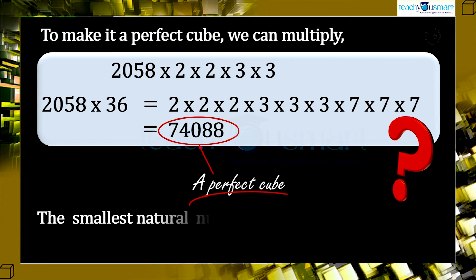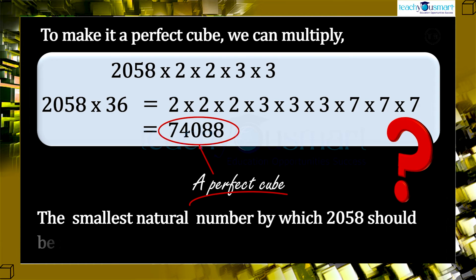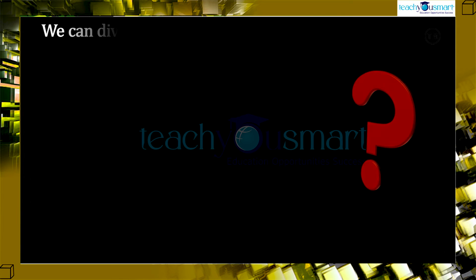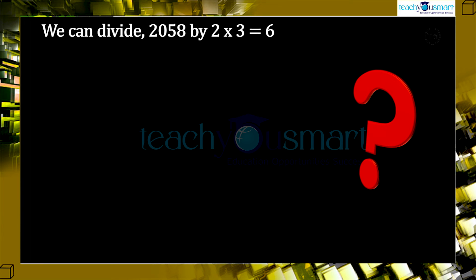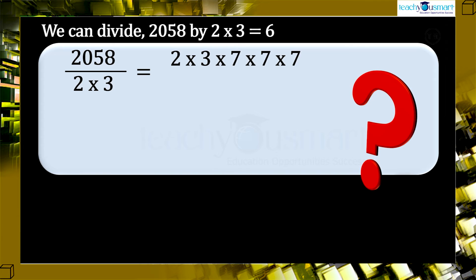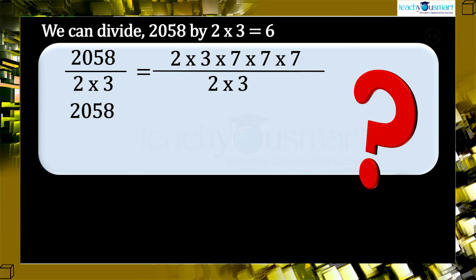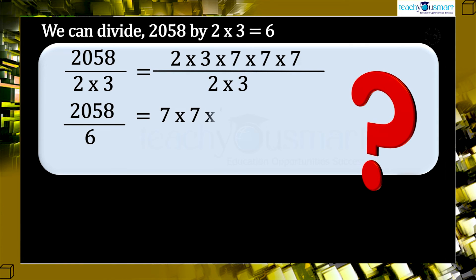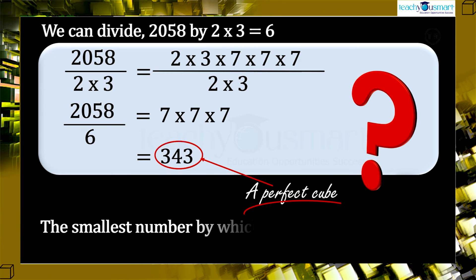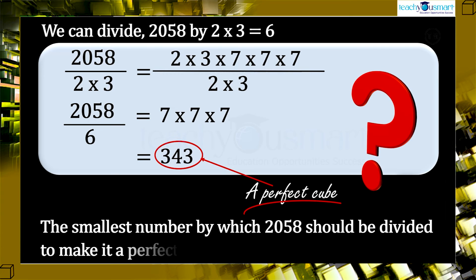Therefore, the smallest natural number by which 2058 should be multiplied to make a perfect cube is 36. Alternatively, we can divide 2058 by 2 × 3 = 6. Then 2058 ÷ 6 = 7 × 7 × 7 = 343, which is a perfect cube. Therefore, the smallest number by which 2058 should be divided to make it a perfect cube is 6.